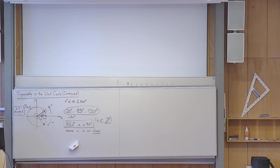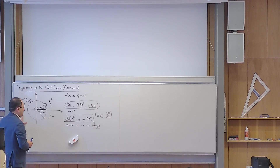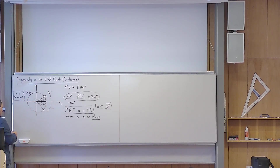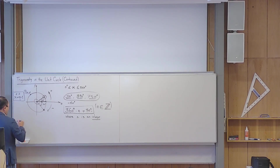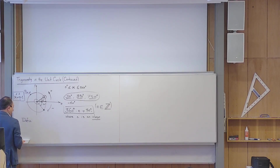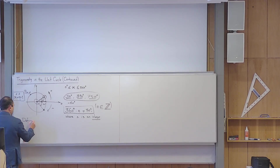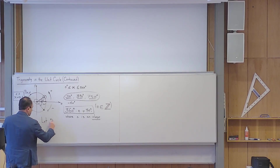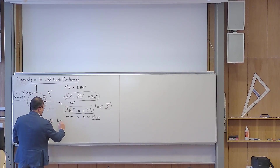So that was more or less what we had before. Now let me try to define what is the meaning of sine, cosine, and tangent of a trigonometric angle. I want to define a concept for you. This is a definition. Let theta be a trigonometric angle.